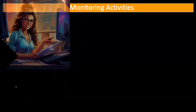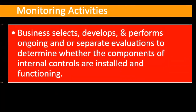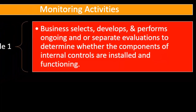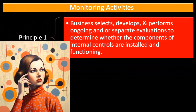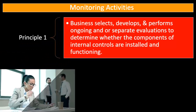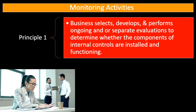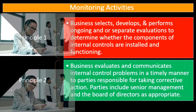Next we look at monitoring activities. Principle number one: the business selects, develops, and performs ongoing and separate evaluations to determine whether the components of internal controls are installed and functioning. We come up with a plan for internal controls, implement that plan with the control activities, communicate that information, and then monitor to see if the internal control processes are set up well and doing what we expect.